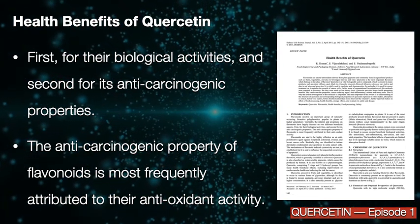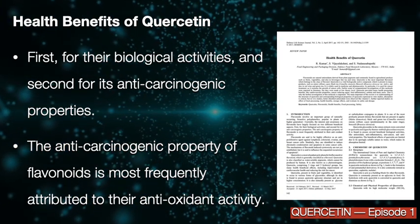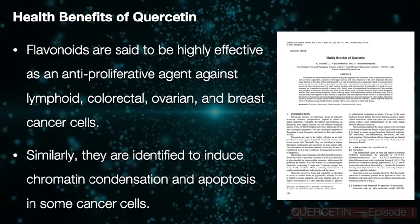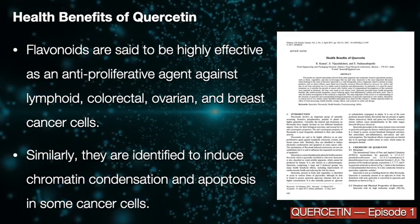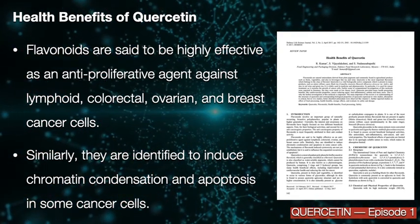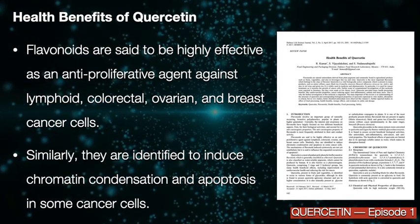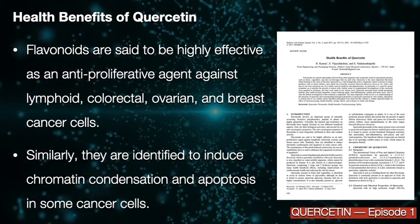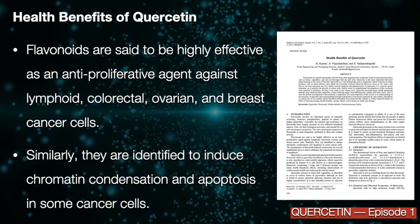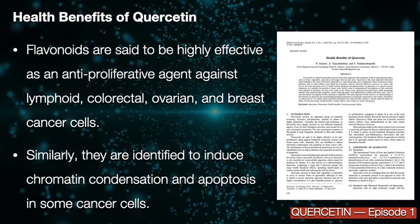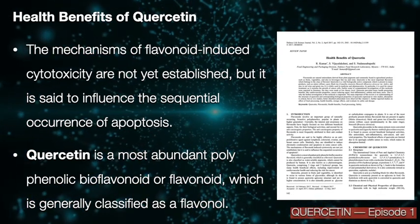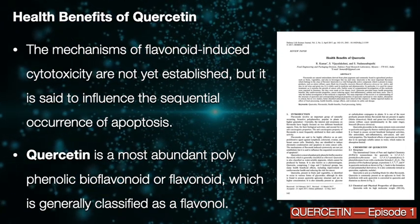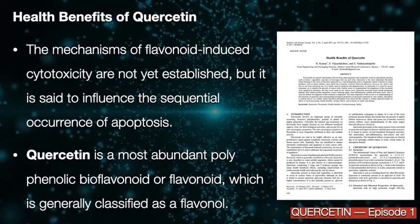The anti-carcinogenic property of flavonoids is most frequently attributed to their antioxidant activity. Flavonoids are said to be highly effective as an anti-proliferative agent against lymphoid, colorectal, ovarian and breast cancer cells. Similarly, they are identified to induce chromatin condensation and apoptosis in some cancer cells. The mechanisms of flavonoid-induced cytotoxicity are not yet established, but it is said to influence the sequential occurrence of apoptosis.